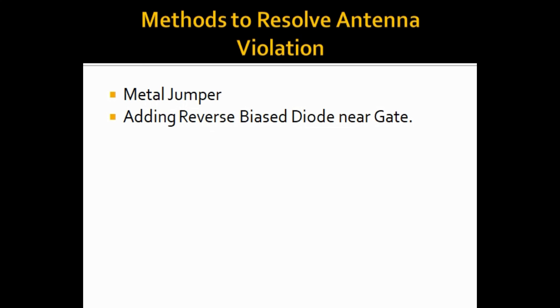Once we have antenna violations, we need to resolve them. In this video we'll discuss the two most common ways: the first is a metal jumper, and the second is diode insertion — specifically adding a reverse biased diode near the gate.